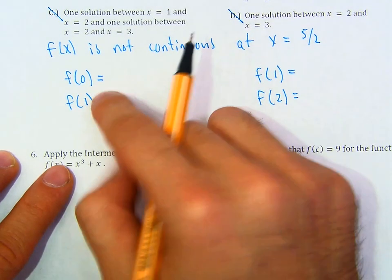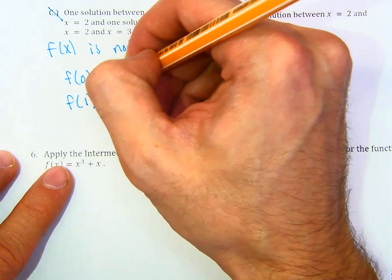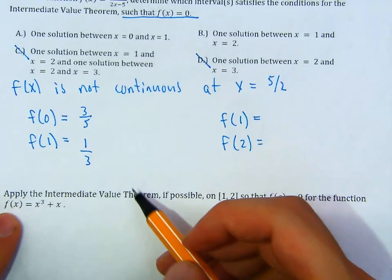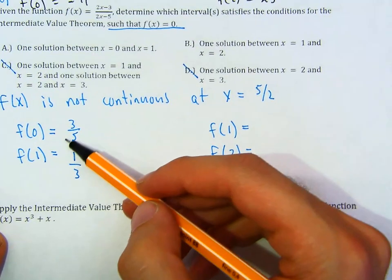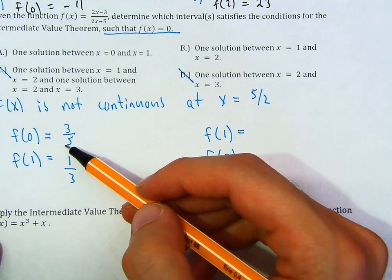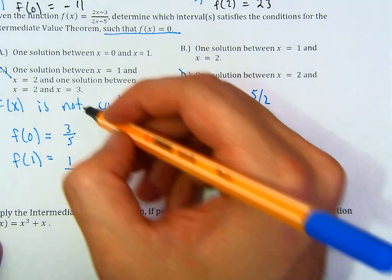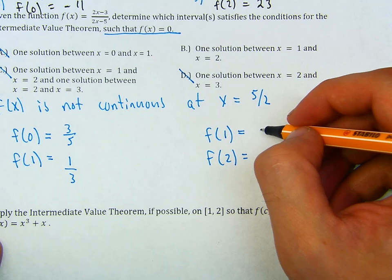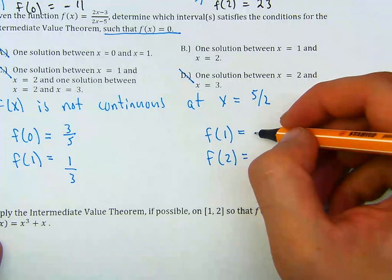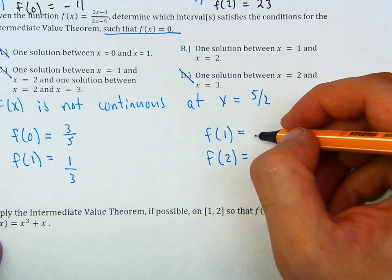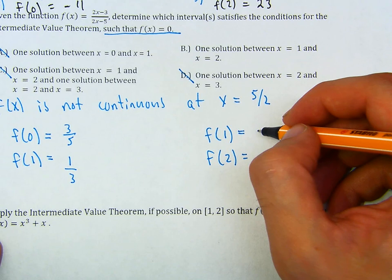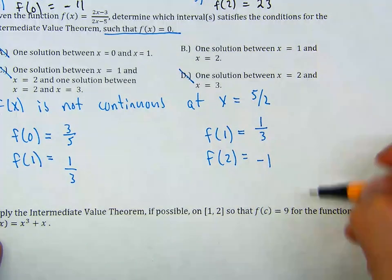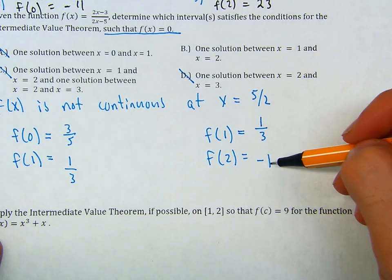When you plug in 0, you get negative 3 over negative 5, which is 3 over 5. When you plug in 1, you get negative 1 over negative 3, which is 1 over 3. Both f of x values are positive, so that interval will not work. But for the interval from 1 to 2: f of 1 is 1 over 3, and f of 2 is negative 1. We have one that's positive and one that's negative.